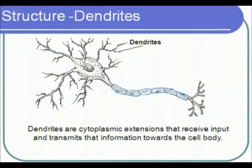Neurons have many dendrites extending from the cell body. They receive input from other neurons. This information is then transmitted to the cell body, where it is turned into a neural impulse, also called an action potential.